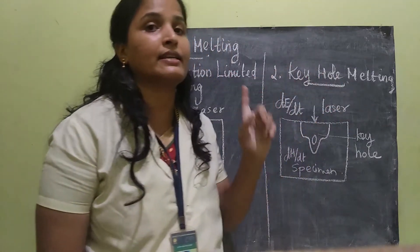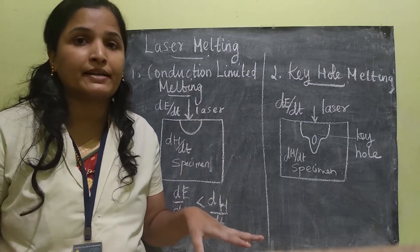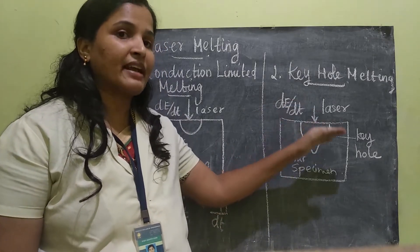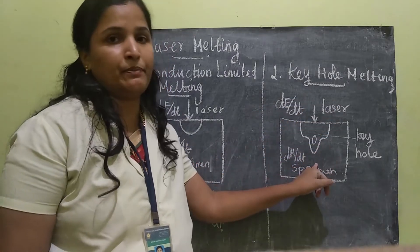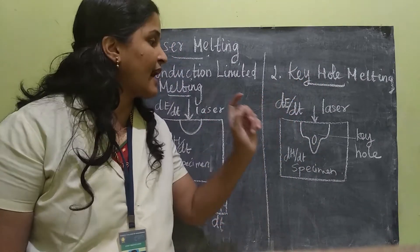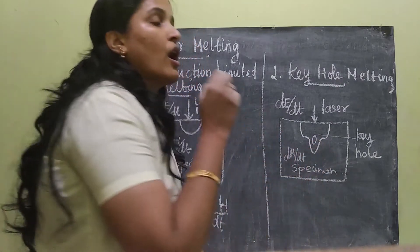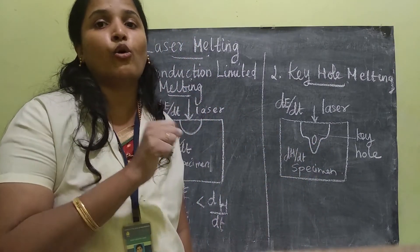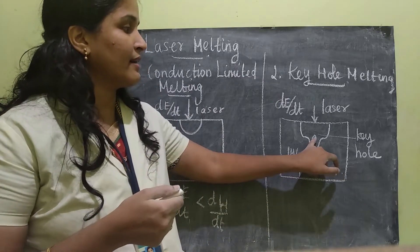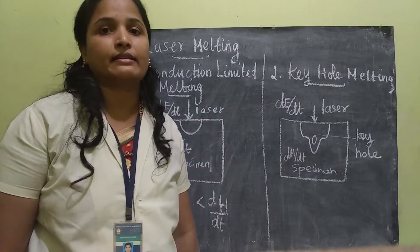Now let's see keyhole melting. The other name for keyhole melting is deep penetration melting. In the name itself, it tells us that the penetration will be quite deep. The name 'keyhole' is derived from the structure — it is looking like a hole, a keyhole, like the house keyhole. Because of that it is named like this.